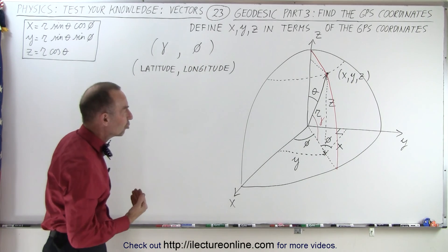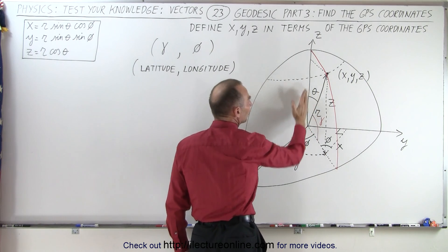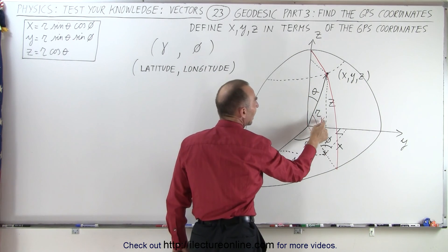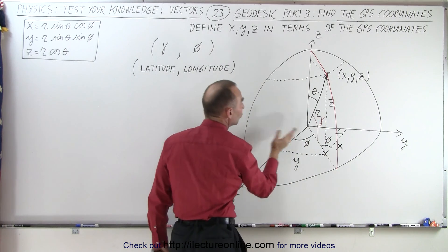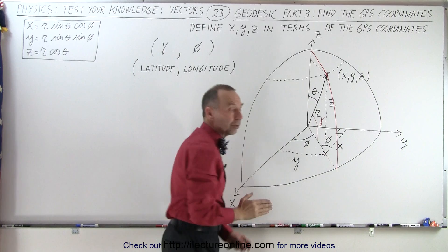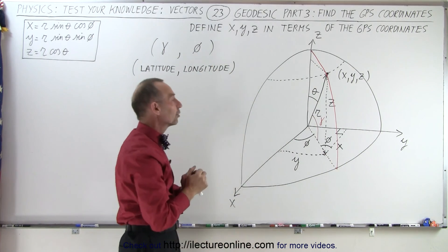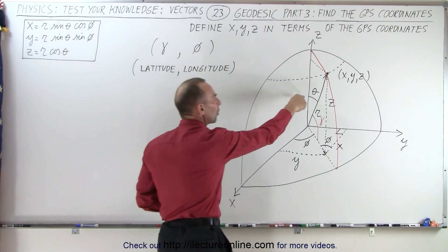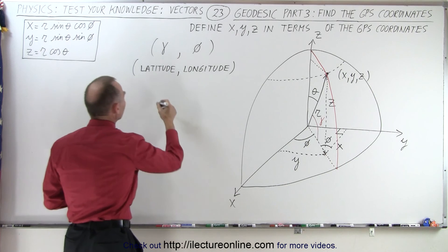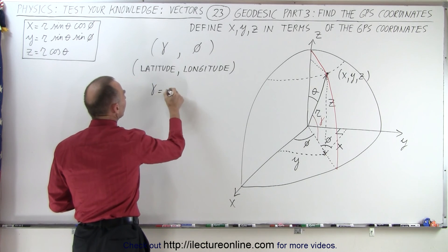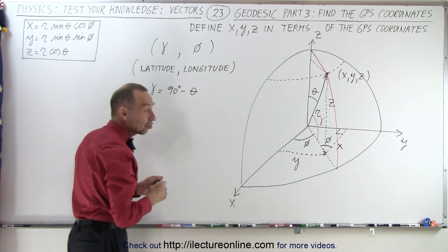But for latitude, we have to make a change. In spherical coordinates, the angle theta is referenced to the North Pole. The angle we call lambda, which represents latitude, is referenced from the equator. So we have positive 90 degrees at the North Pole and negative 90 degrees at the South Pole. So somehow we have to convert these two angles, and we can see that the latitude angle lambda is equal to 90 degrees minus theta.